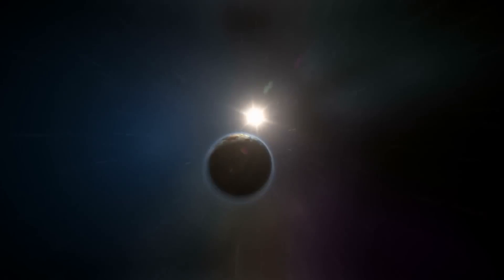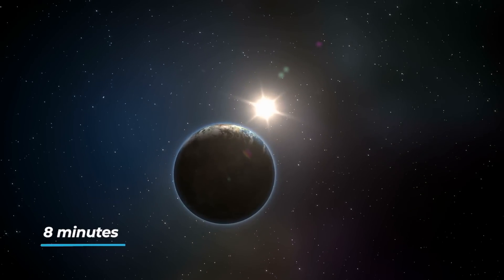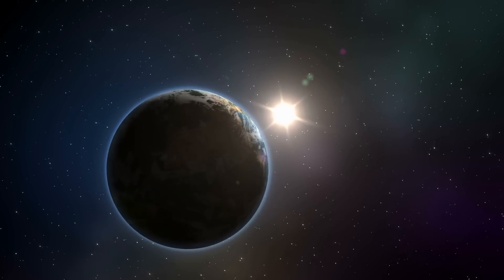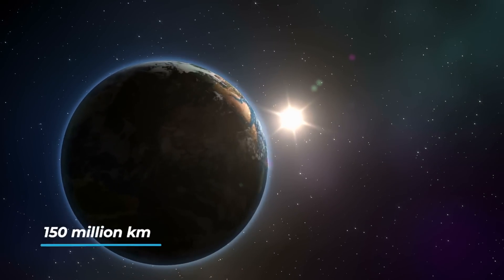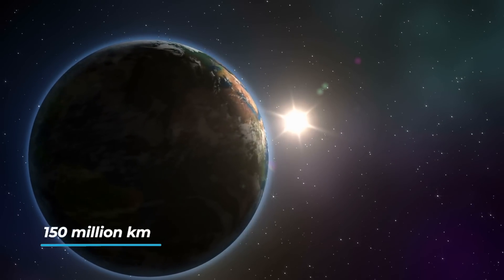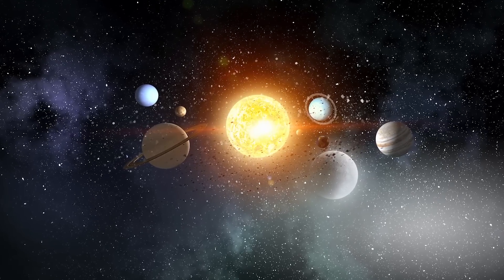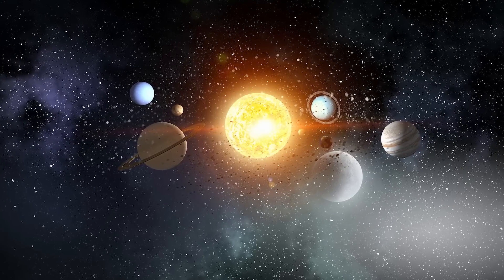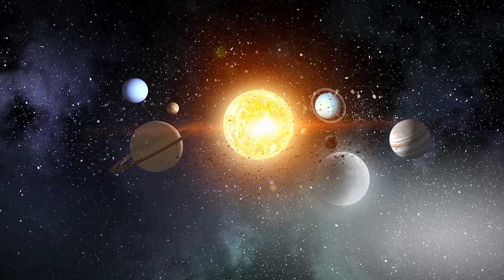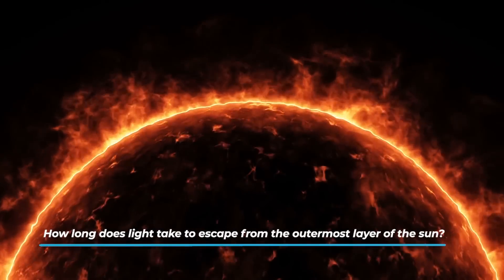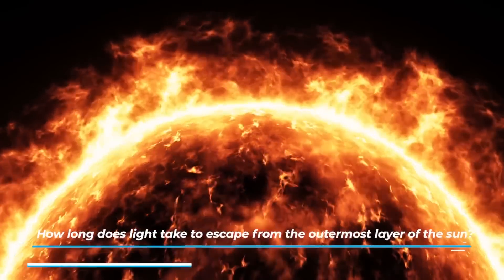As you might have read somewhere, light only takes eight minutes to cover the distance between the sun and the earth. Yes, that's an insanely short time, considering that we are talking about 150 million kilometers. Now, we all know how long light takes to get from us to the sun, but maybe a question to which only a few people could answer is, how long does light take to escape from the outermost layer of the sun?